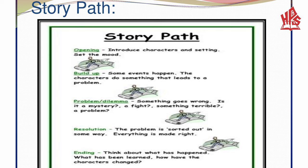The Story Path begins with the Opening — introduce characters, establish the setting, and set the mood. Then comes the Build Up, where some events happen and the characters do something that leads to a problem. In the Problem or Dilemma, something goes wrong — if it's a mystery, a fight, something terrible, or a problem. The Resolution is where the problem is sorted out in some way, everything is made right, and the Ending reflects on what has happened.